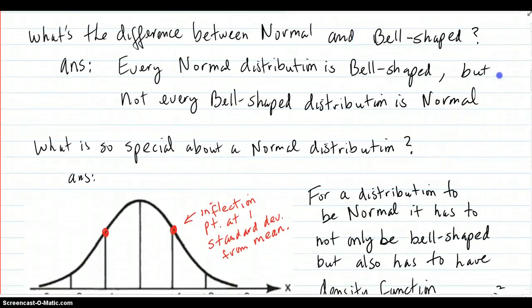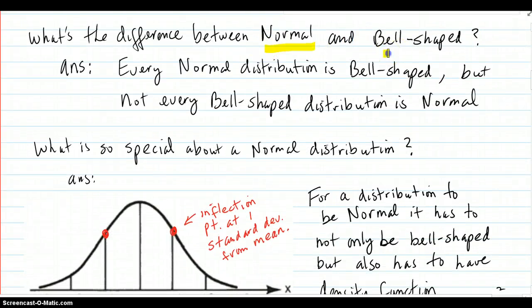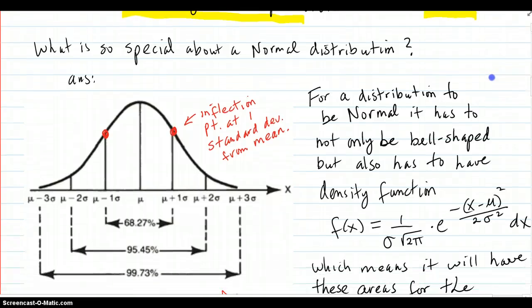So what's the difference between normal and bell-shaped? Every normal distribution is bell-shaped, but not every bell-shaped distribution is normal. So what's so special about the normal distribution?